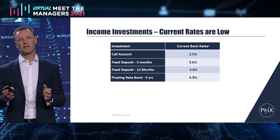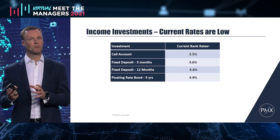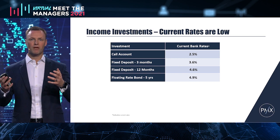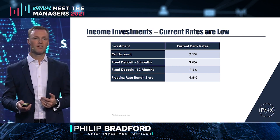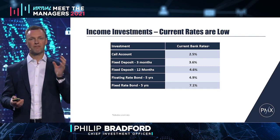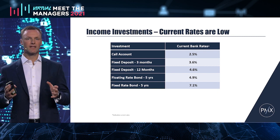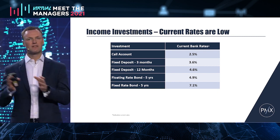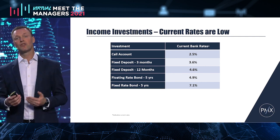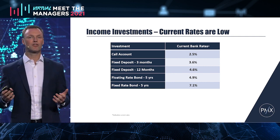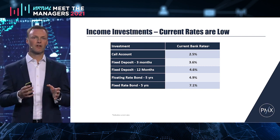Moving into the bond space — that same Standard Bank floating-rate bond is giving you about 4.9%. If I go to a Standard Bank fixed-rate bond, same issuer, same term of five years, I'm getting 2.2% higher return just for taking a fixed rate versus a floating rate. As an investor this becomes very interesting because I'm taking the same credit risk — it's still Standard Bank, the same term — but I'm getting paid 2.2% more.